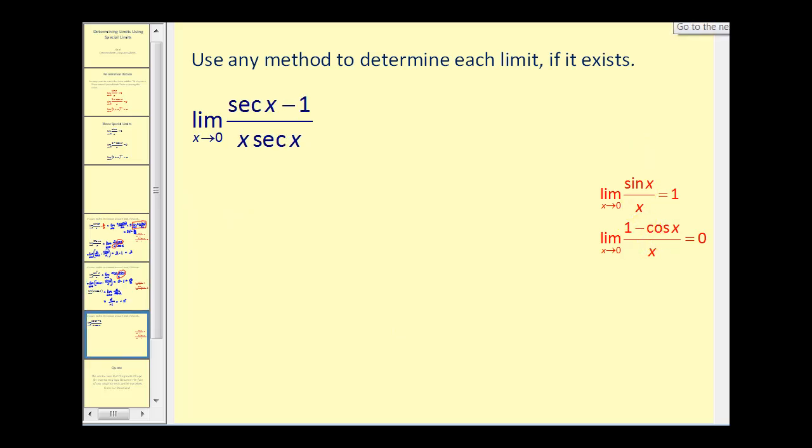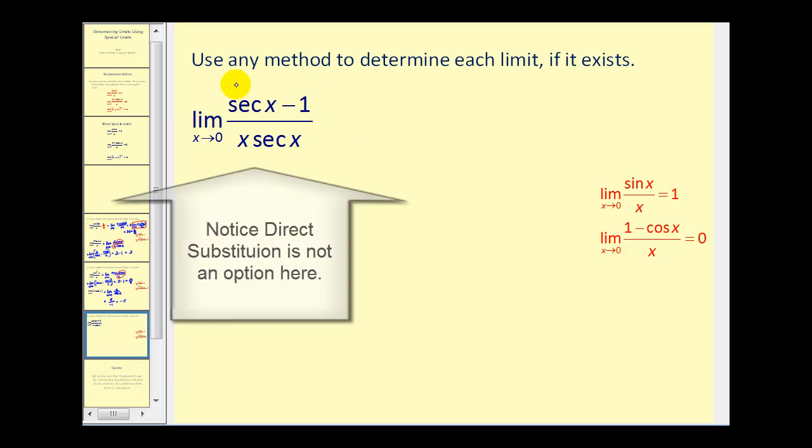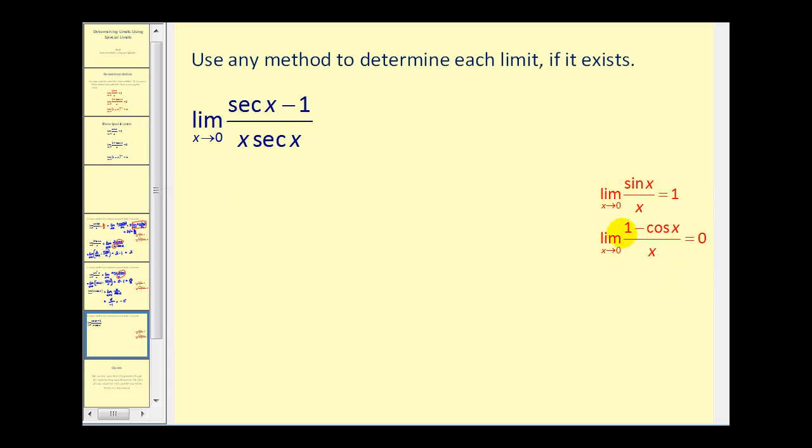I think we have time for one more. So notice in this last problem, we have several secant functions. So to recognize if we can utilize these special limits, let's convert the sec(x)'s into 1 over cos(x). Now what we'll do here is multiply both the numerator and denominator by cos(x), so we can eliminate the fractions.